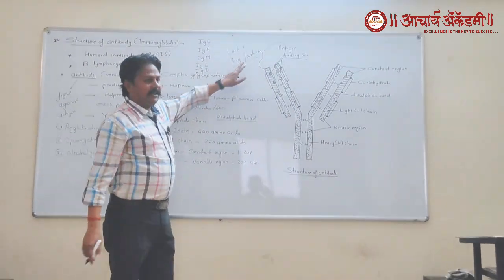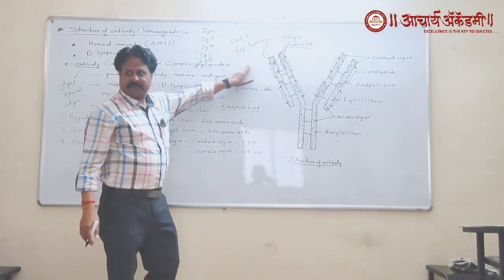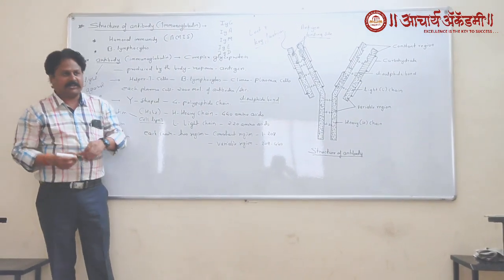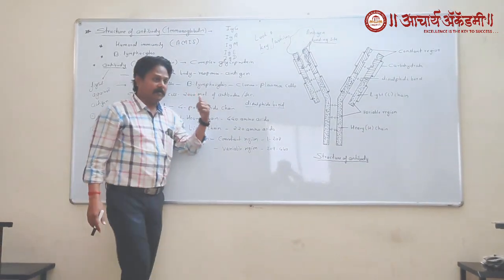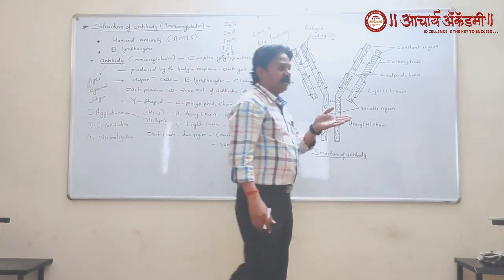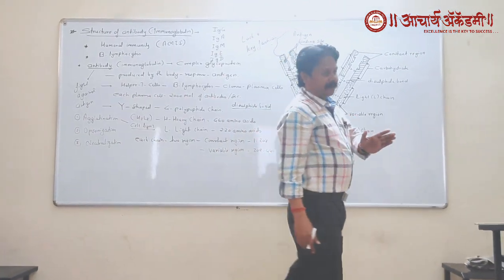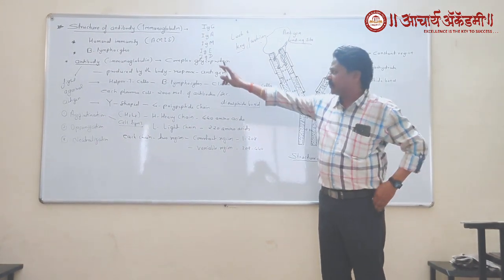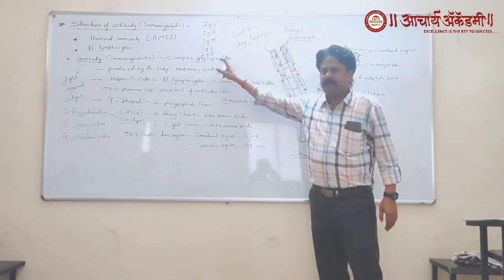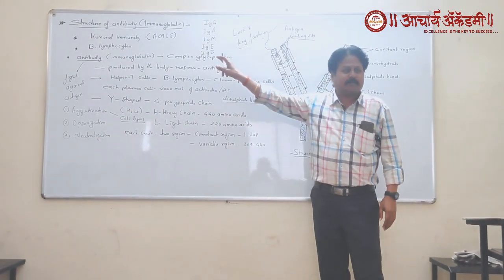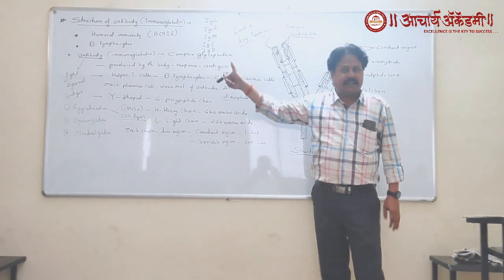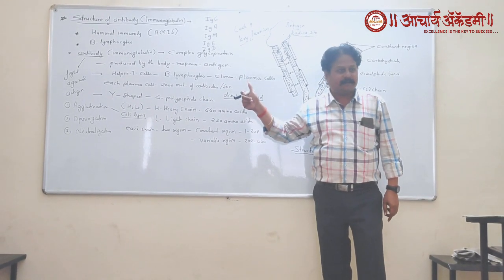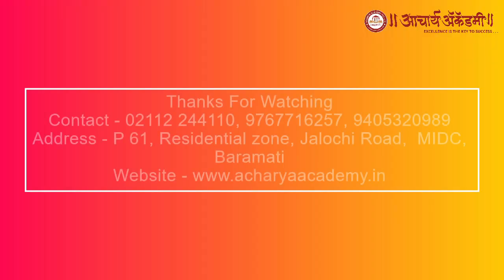So, the substance produced by the B-lymphocytes in the body — which provides humoral immunity by protecting our body from antigens through the production of complex glycoproteins — is clear. These are antibodies, and they form the basis of the antibody mediated immune system.